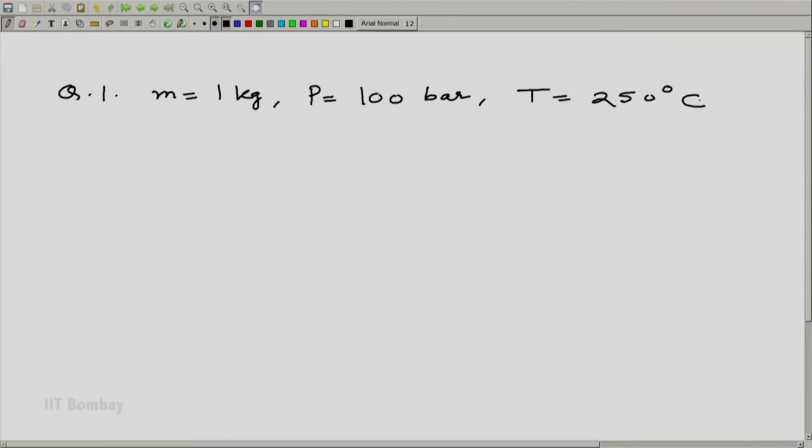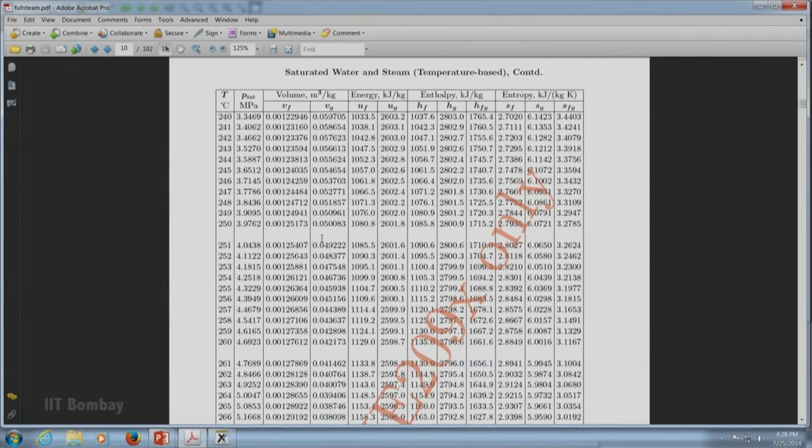Let us go to table 1 and see what is the P_sat value for 250 degrees. Let us refer to table 1 and find out corresponding P_sat value and then we can compare that with P. Let us go to steam table, table 1 and see what is P_sat at 250. Here we are, temperature is 250 degree centigrade and corresponding P_sat_T is 3.9762, which is P_sat value. Let us note down this value and compare it with the P that we have been given.